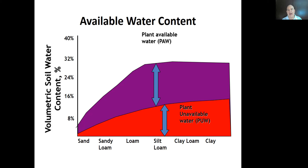Looking at this by soil texture, the rule of halves isn't perfect — in some cases it's more or less than half. Also, when we look at volumetric water content, which is how most sensors measure water, it's a moving target depending on soil texture. With a pure sandy soil there's not much volumetric water content at field capacity and a narrow window of plant available water.